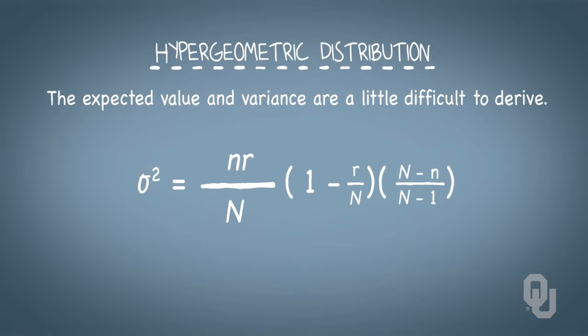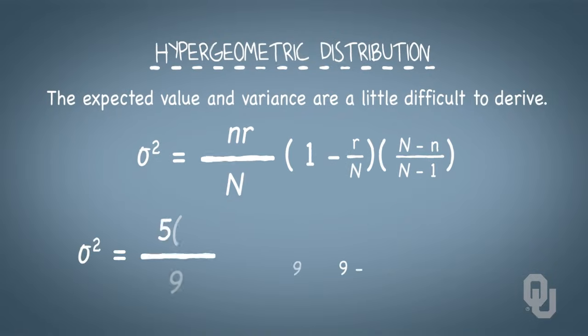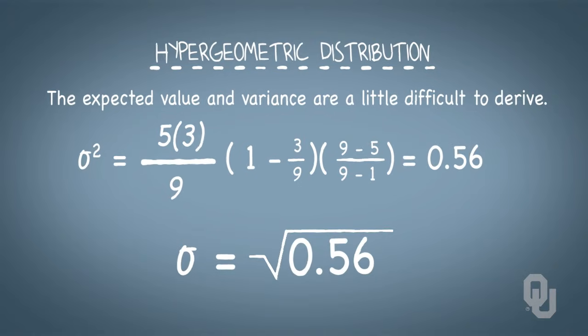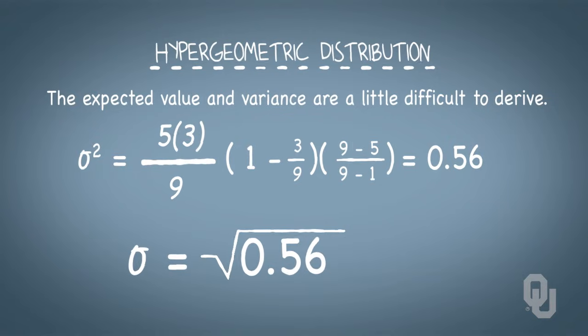The variance is much less intuitive. The variance of the number of chemists on the committee would be 0.56 chemists squared. Note that's different from square chemists. And the standard deviation would be 0.75 chemists.